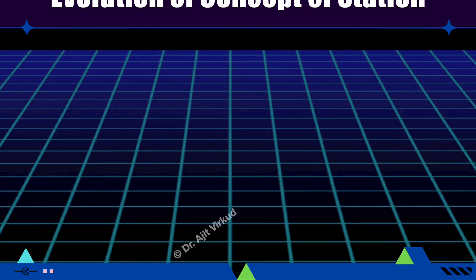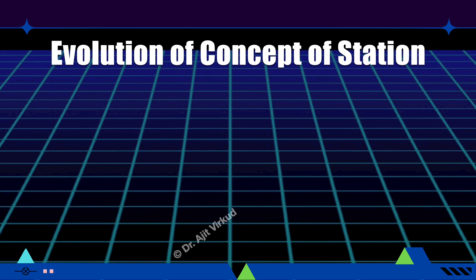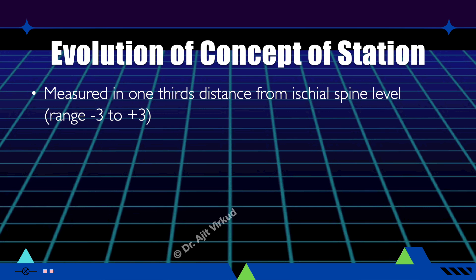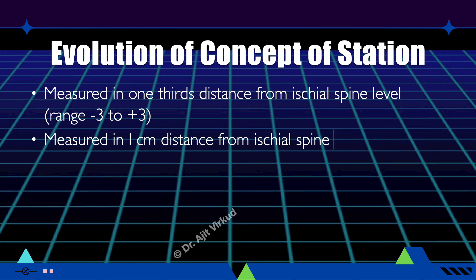Methods of estimating fetal station have evolved over time. Initially it was measured in one-third of the distance from the ischial spine level to the pelvic brim above and ischial tuberosities below, so the range of station was initially minus 3 to plus 3. As the one-third distance was difficult to estimate, it was later changed to distance in centimeters from ischial spine level, changing the range to minus 5 to plus 5.